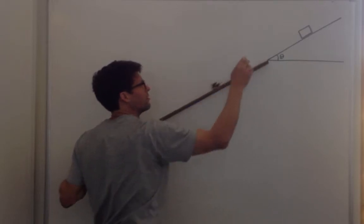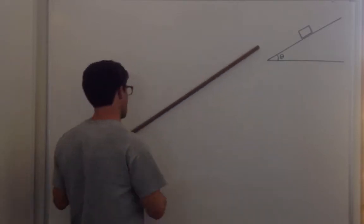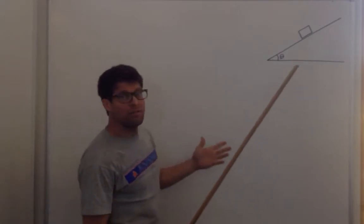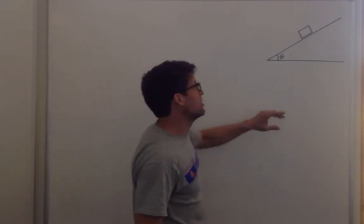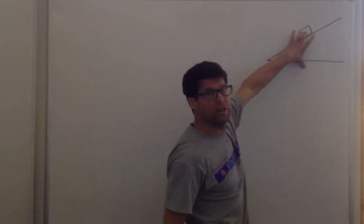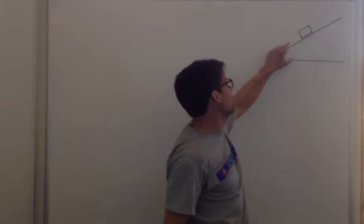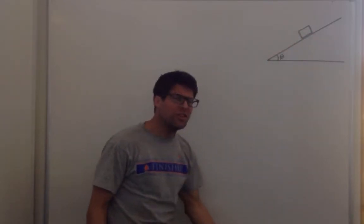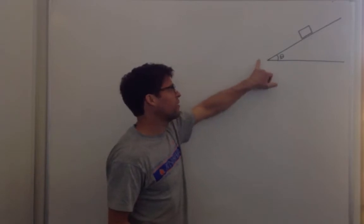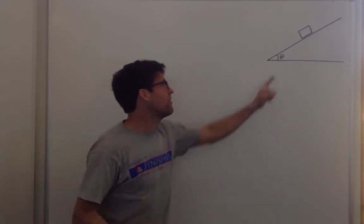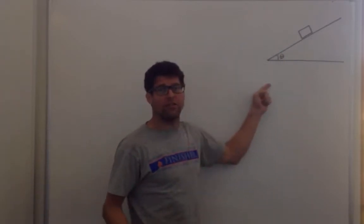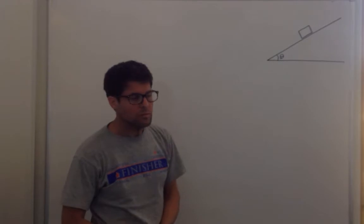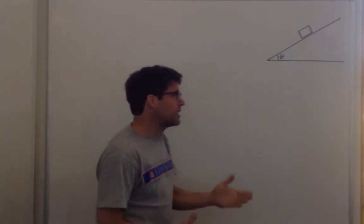The inclined plane. What's going on? We could solve this using energy considerations — we have potential energy due to a change in height turned into kinetic energy. We could even use that to find the final velocity and then find the acceleration on the way down, knowing the length. However, we could solve it directly.